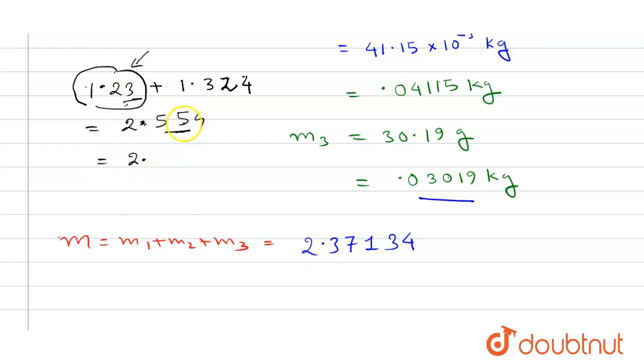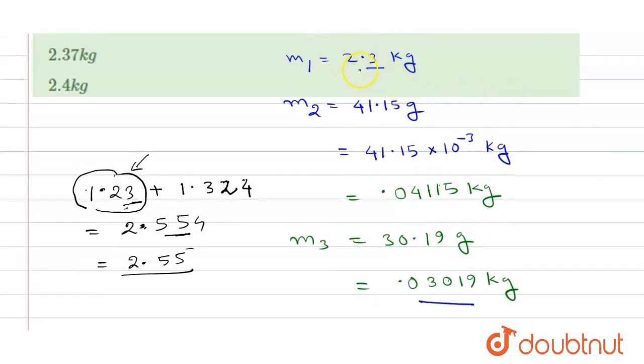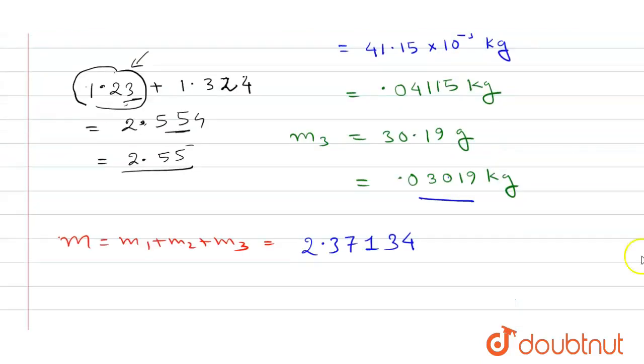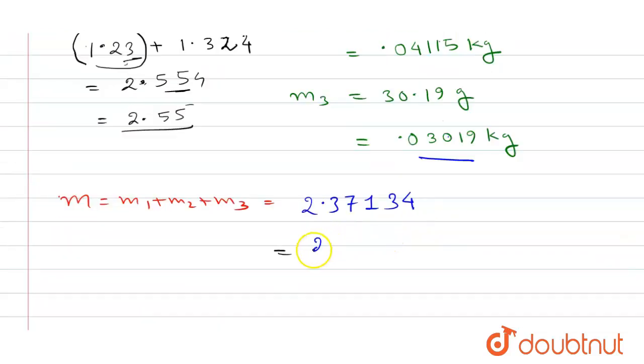Similar to this, if we look at these three numbers, then 2.3 has the highest decimal place after the decimal point. So we must round this off to the same decimal place as m1.